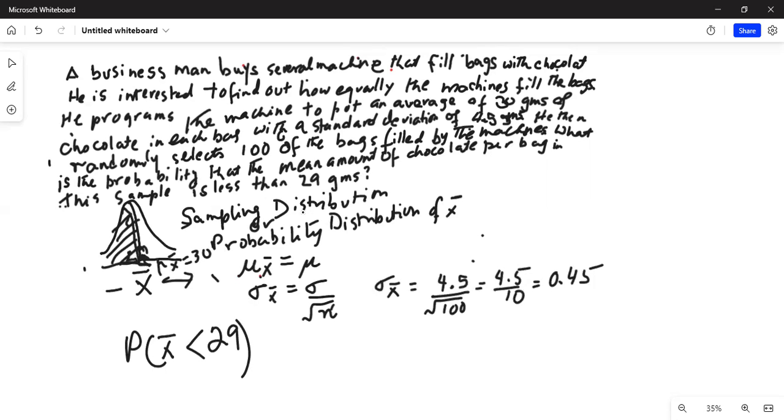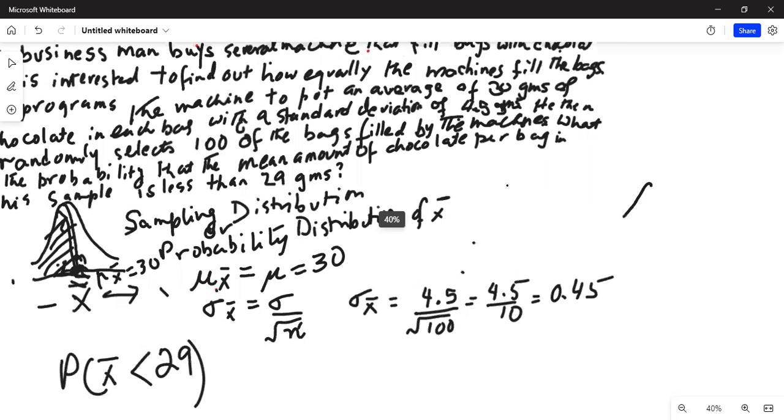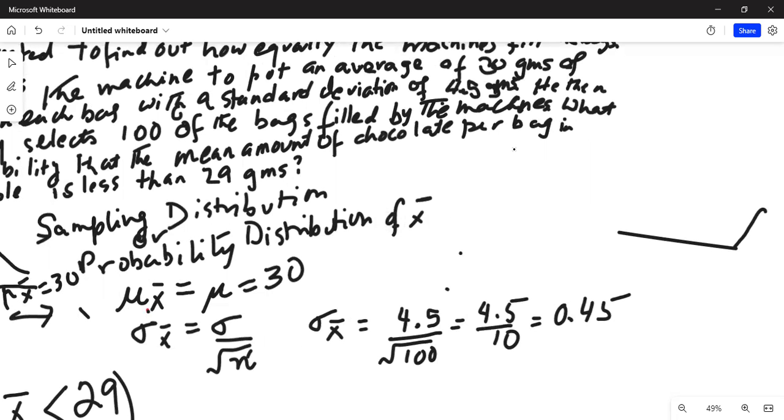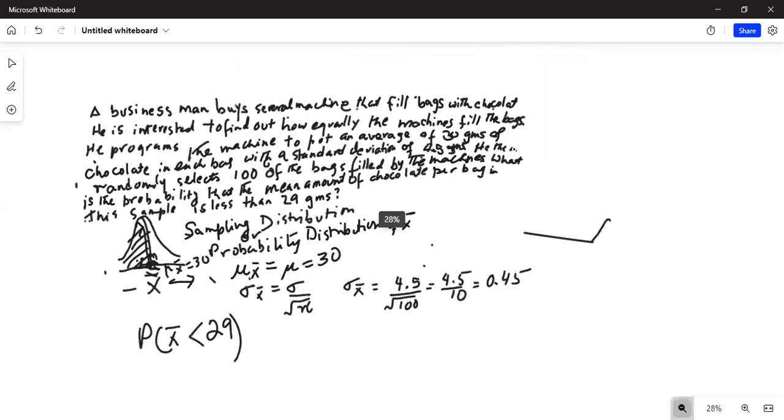We know the mean mu x bar equals mu equals 30 and sigma x bar is equal to 0.45. So basically we have to find the area to the left of 29. Maybe I should draw another diagram a little more clearly.